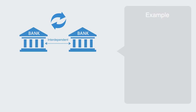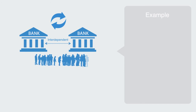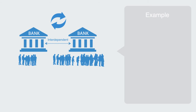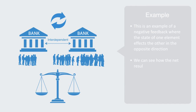To illustrate this, say more people are using bank A and this leads to overcrowding in the bank. This may then feed back to affect the users as they decide to go to bank B, which is now quicker and easier to use. And likewise, if bank B after some time then becomes overcrowded, people may move back to bank A. This is an example of a negative feedback where the state of one element affects the other in the opposite direction. We can see how the net result of this would be a stable system. If we had a hundred banks in this town governed by this rule, the result would be a very evenly distributed and stable system where the agents occupy a wide variety of states with respect to the banks that they use.